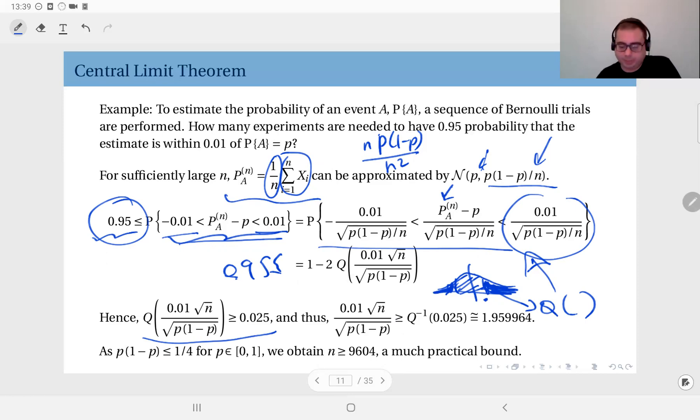And when you arrange the terms and solve for n, you get the lower limit as 9604, which is much more practical as opposed to you see this 50,000.